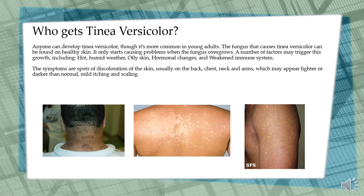The symptoms are spots of discoloration of the skin, usually on the back, chest, neck, and arms, which may appear lighter or darker than normal, with mild itching and scaling.